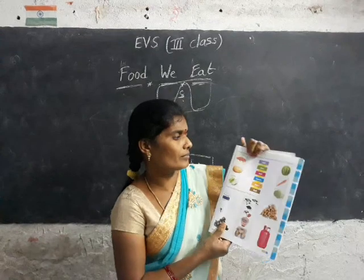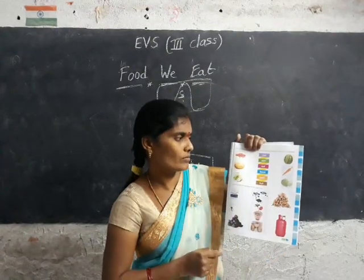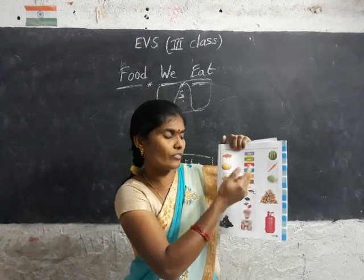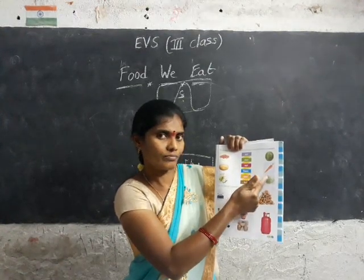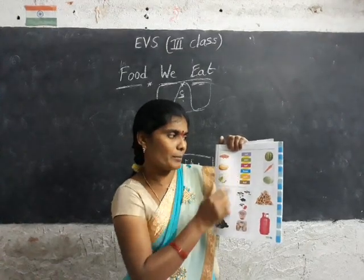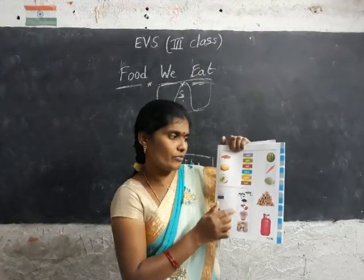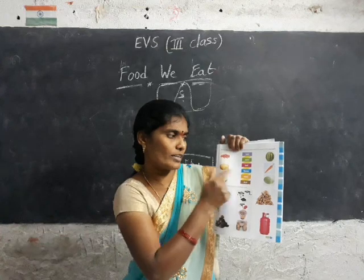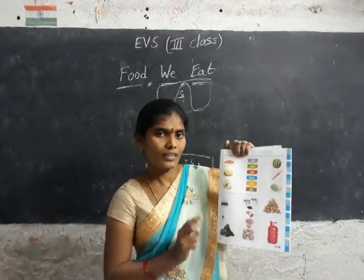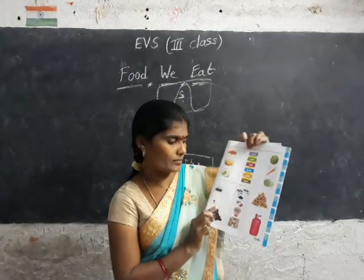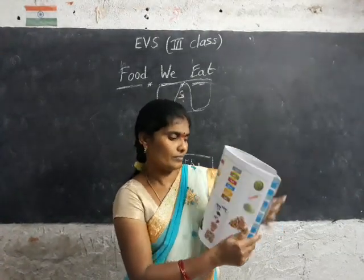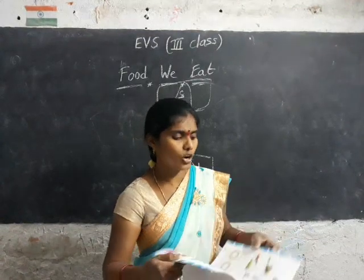Next, identify the root, stem, leaf, leafy vegetable, flower, seed, and fruit from the given diagrams. Take help from your course book. These two pages — 18 and 19 — are your homework.